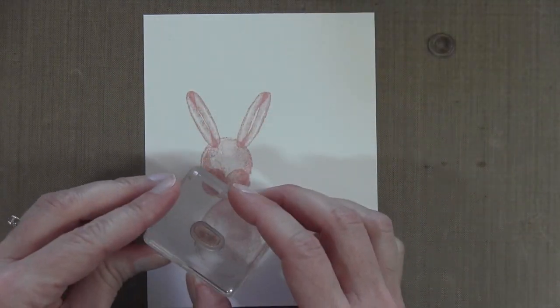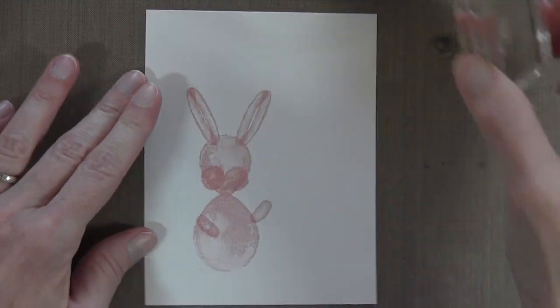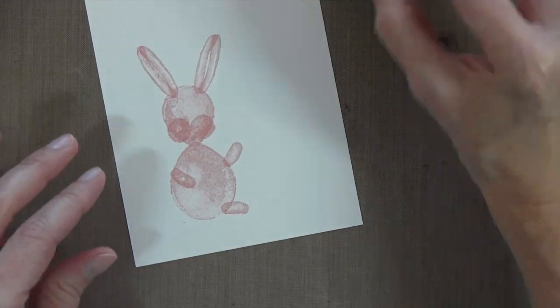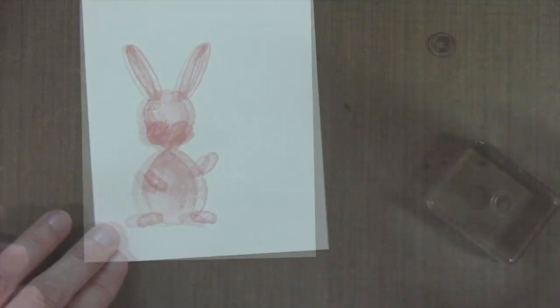For his arms I'm using the short fat balloon. One's going to be going up to hold the balloon and the other one's just going to be wrapping around his belly. Then I'm just going to add two feet at the bottom with that same stamp.